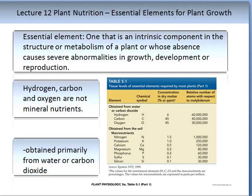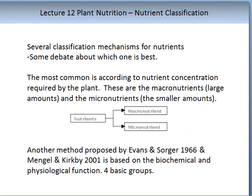As you can see from Table 1, the concentration of these essential elements that are not nutrients are very high. There are several classification mechanisms for nutrients and there is some debate about which one is best. I am going to present two of these to you today. The most common is according to the nutrient concentration acquired by the plant, and these are separated into two main groups.